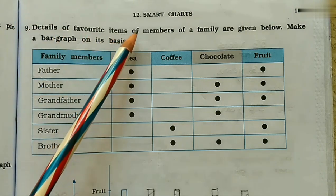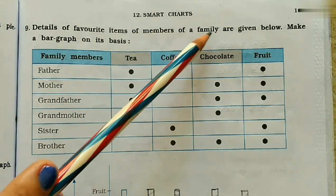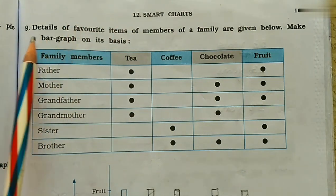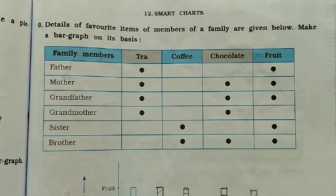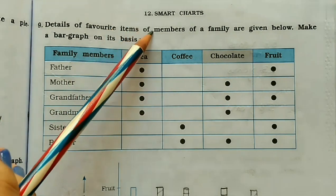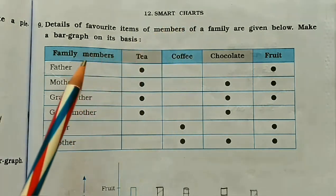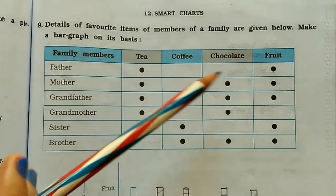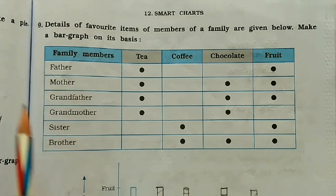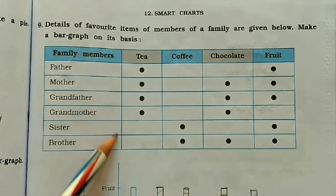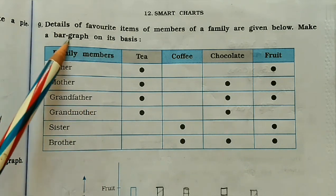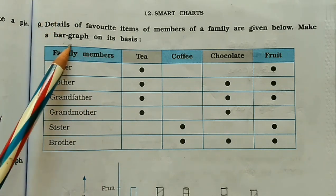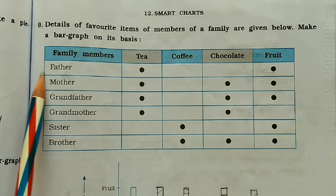The question details the favorite items of members of a family given below — make a bar graph on its basis. You can see here the favorite items of members of a family: what they like — tea, coffee, chocolate, or fruits. According to these details, we have to make a bar graph. What is a bar graph and how to make it, I will explain you first. See this table.